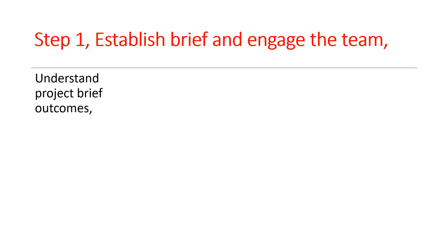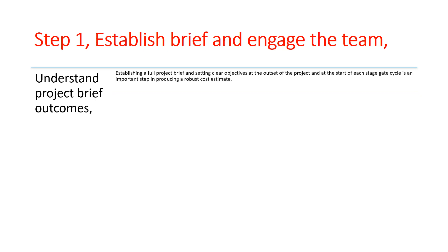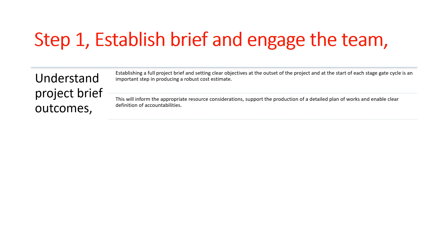Step 1: Establish Brief and Engage the Team. Understand Project Brief Outcomes. Establishing a full project brief and setting clear objectives at the outset of the project and at the start of each stage gate cycle is an important step in producing a robust cost estimate. This will inform the appropriate resource considerations, support the production of a detailed plan of works, and enable clear definition of accountabilities.